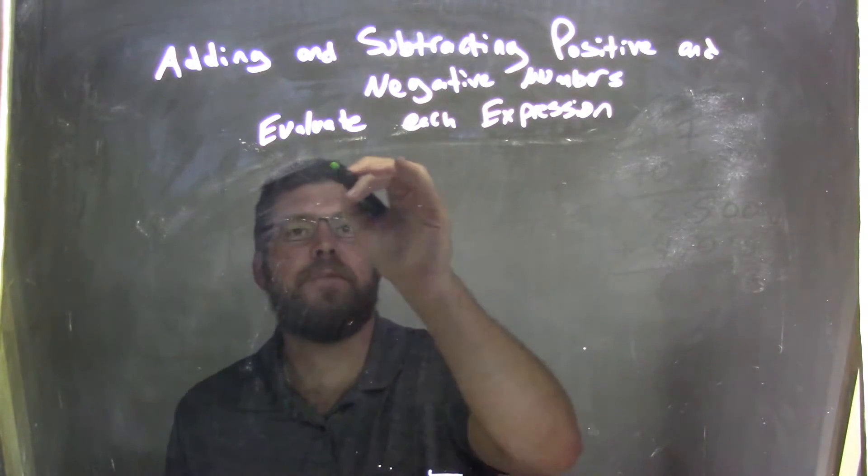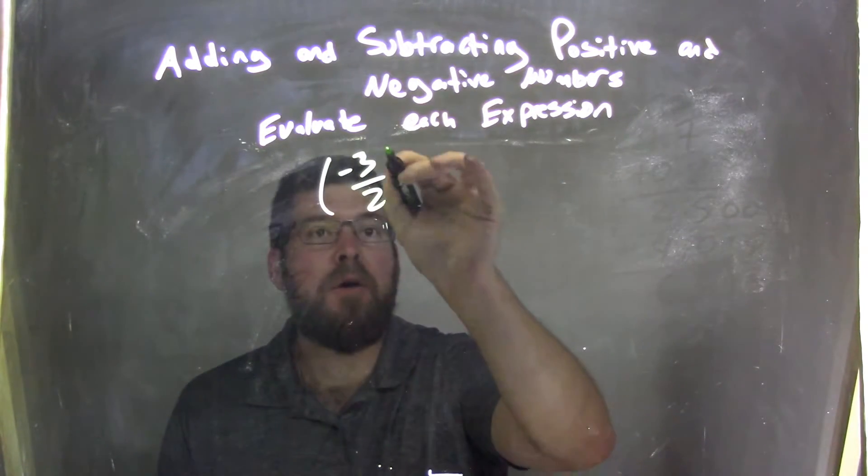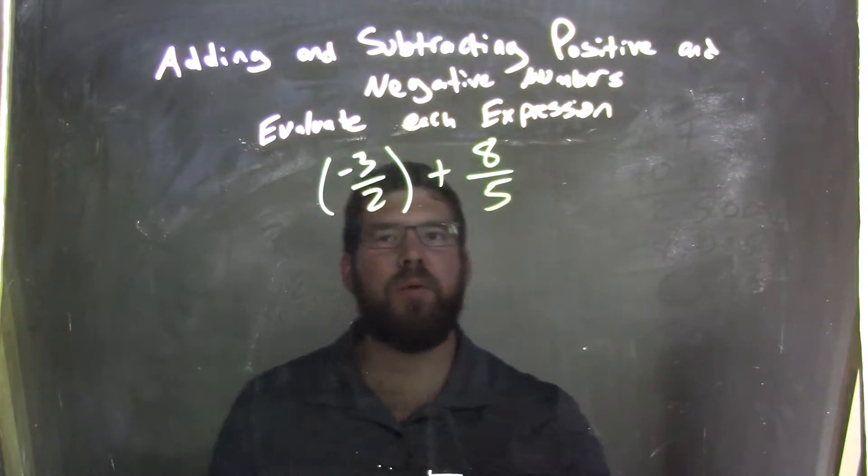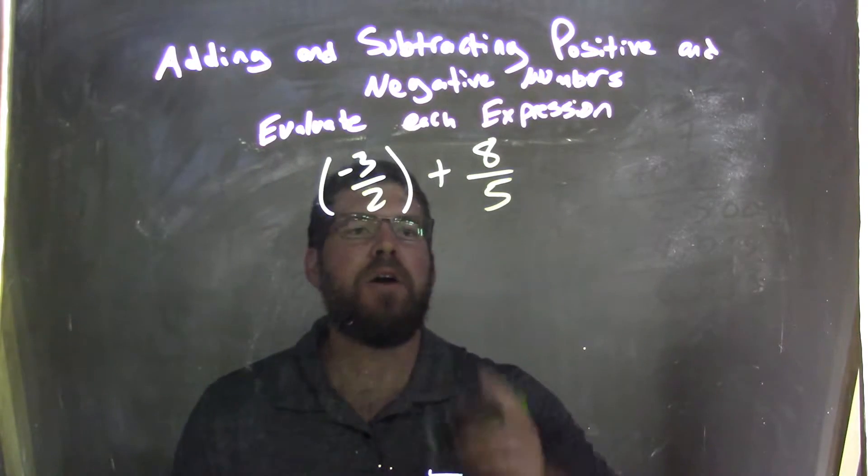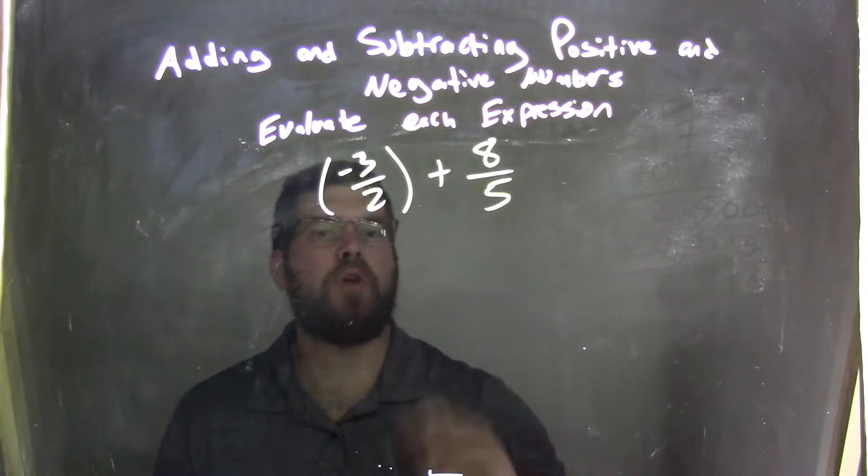So if I was given this expression, negative three halves plus eight fifths, well, what I need to do here is find a common denominator. Two and five aren't the same. I can't add these fractions, but I know they both go into ten.